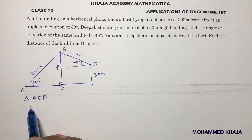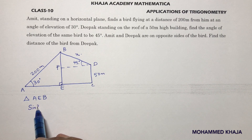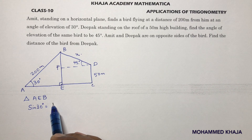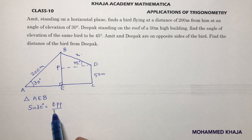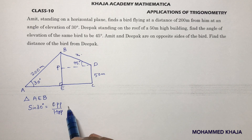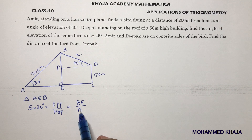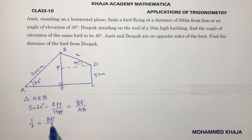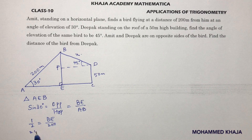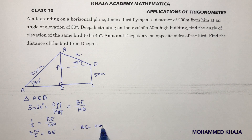In triangle AEB, sin theta equals opposite over hypotenuse. So sin 30 equals BE over AB, where AB is 200 meters. Sin 30 is 1/2, so 1/2 equals BE over 200. Cross multiplying, 200 divided by 2 equals BE. Therefore BE equals 100 meters.